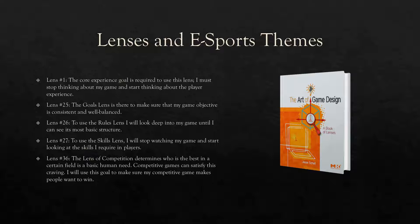Lens 36, the lens of competition: determining who is the best in a certain field is a basic human need. Competitive games can satisfy this craving. I will use this lens to make sure my competitive game makes people want to win. My game does not provide a perfectly fair measure of player skills since it will have unique experience levels. People want to win my game because it is an online tournament. Winning is something everyone can be proud of because they will be rewarded with experience and collectibles. Anyone can join my game from novices to experts, as it is intended to be a simple online competition. However, experts will be more capable of defeating novices as they will have more skill.